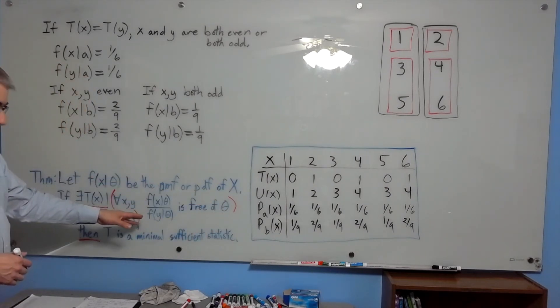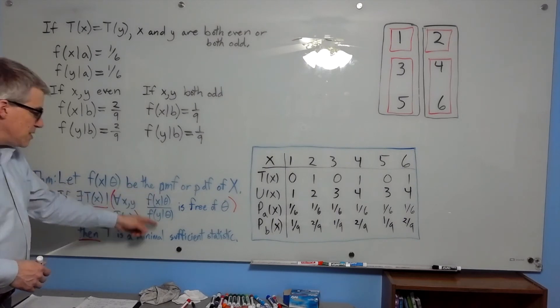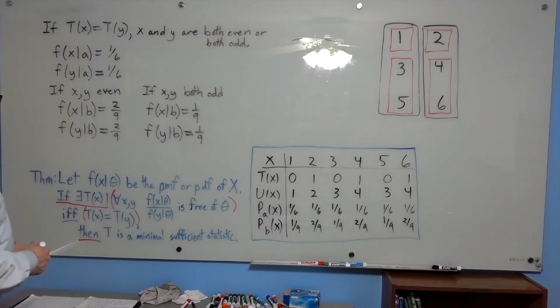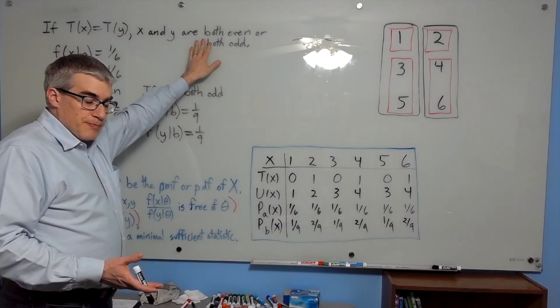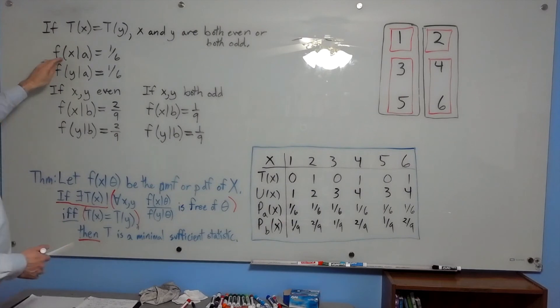It's an if and only if, so let's start by assuming t of x equals t of y. From that, we want to show for all x and y, this fraction is free of theta. Alright, let's get to it. If t of x equals t of y, x and y are both even or both odd. Now, every probability in the case a is one-sixth, so the ratio is always going to be 1. For the b case, the uneven die, if x and y are both even, then the f of x given b is two-ninths.